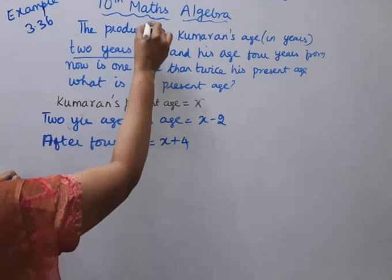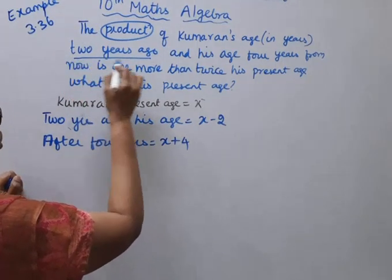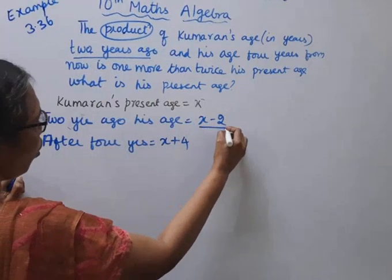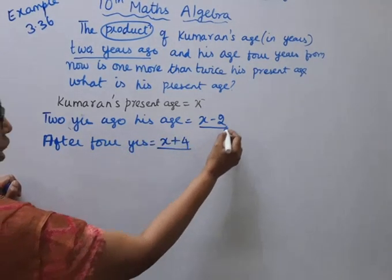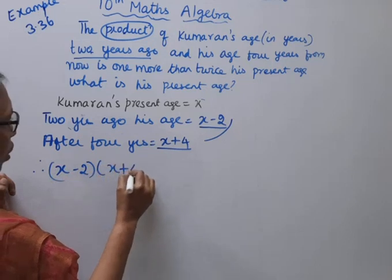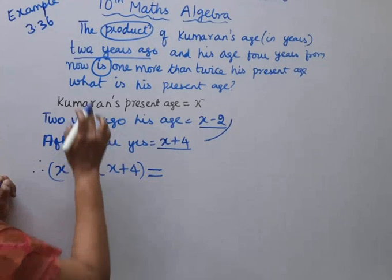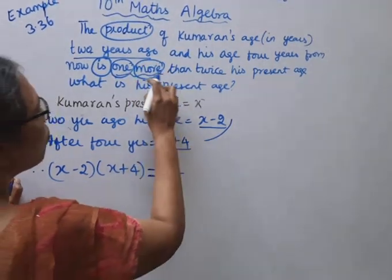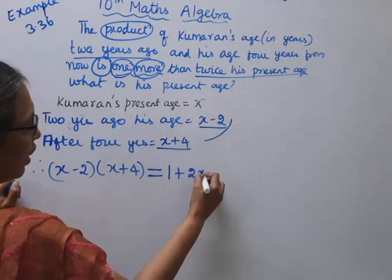The product of Kumaran's age 2 years ago and 4 years from now: therefore, x minus 2 into x plus 4. This is equal to 1 more than twice his present age, which is 1 plus twice x, that is 1 plus 2x.